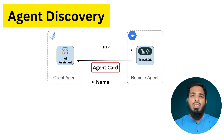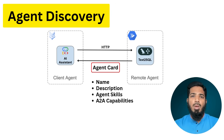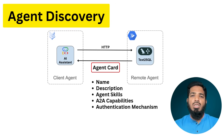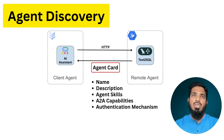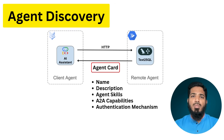The agent card contains agent name, description, agent skills, A2A capabilities, and authentication mechanism. Agent skills define what the agent can do — in our example, the agent is able to prepare SQL queries from a given prompt. Each skill can also have expected input and output structure. A2A capabilities define the agent's communication capabilities, such as: does it support streaming? Does it support push notifications? Does it require authentication? So this agent card is very important as it holds all the information the client agent will need for further communication.